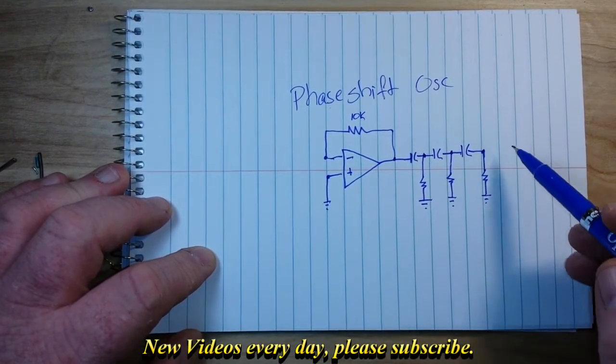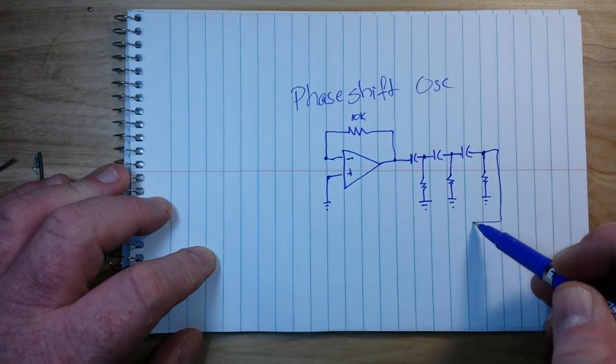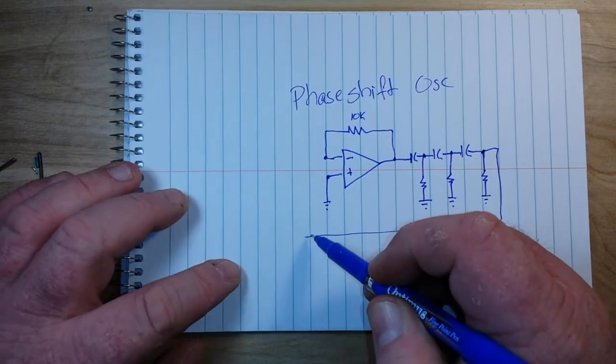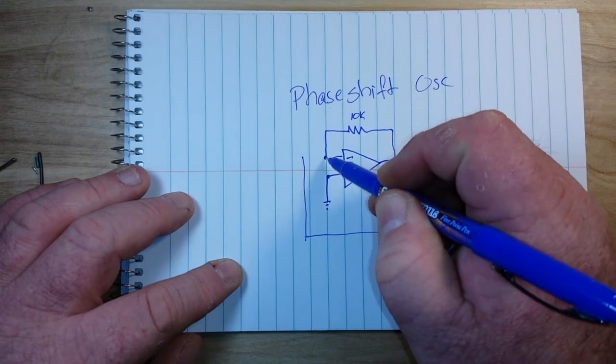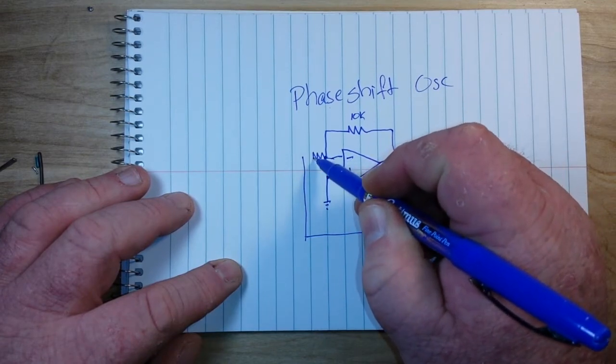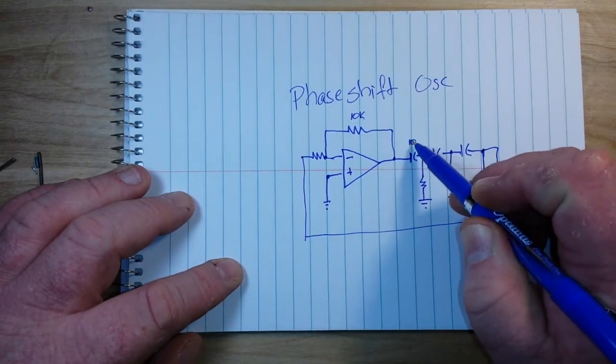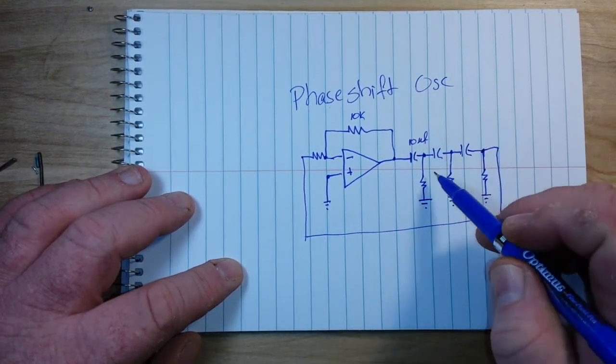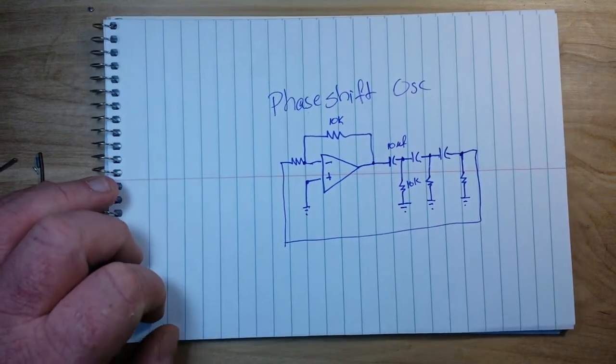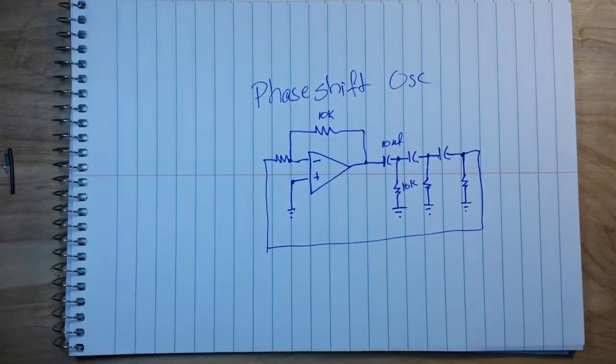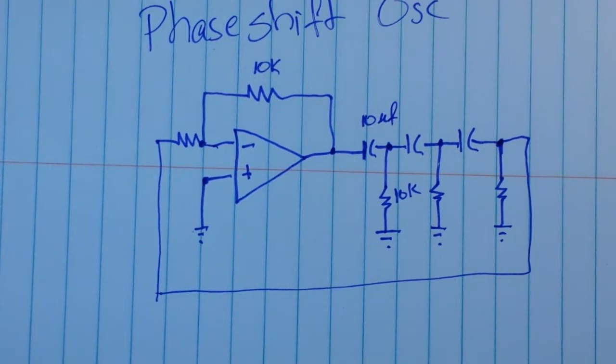And then to tie everything back together we're going to come off that last resistor, come back around and tie it into our inverting input with another resistor. Now our capacitors are all 10 microfarad and our resistors are all 10k. So that's the circuit, I'll zoom in here so you can get a better look at it, very simple.